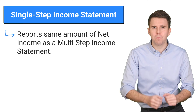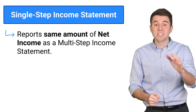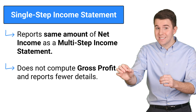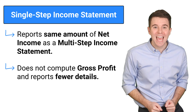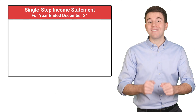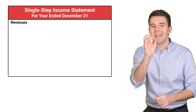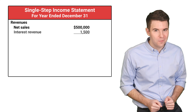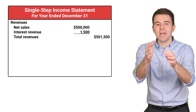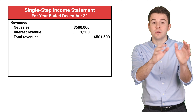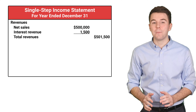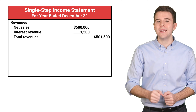Now let's take a look at the single-step income statement. A single-step income statement reports the same amount of net income as the multi-step. The difference is that it does not compute gross profit. It groups together expenses and reports fewer details than the multi-step. So let's prepare a single-step income statement. We start by listing revenues — we report net sales and interest revenue. Unlike the multi-step, the single-step income statement does not show details for returns and allowances and discounts.